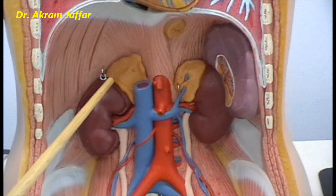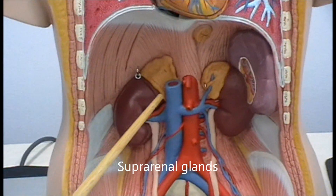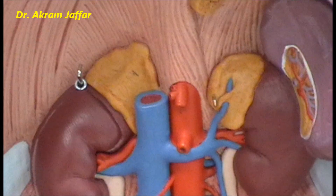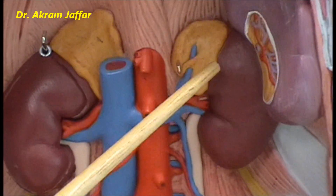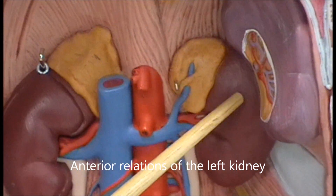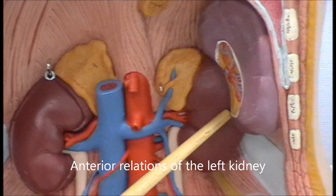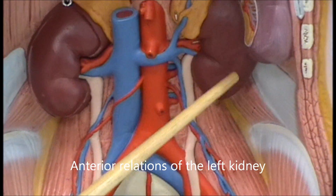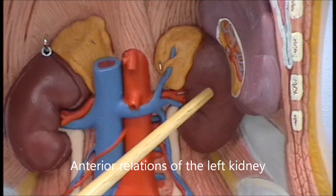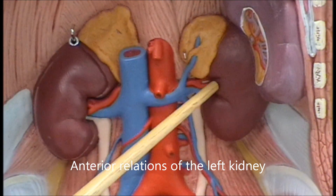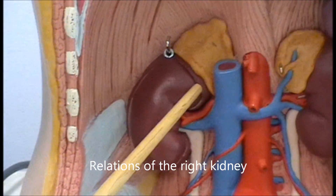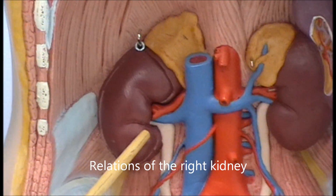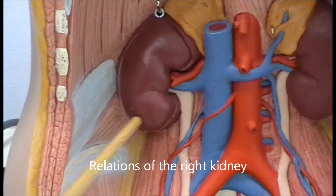The upper pole of each kidney is related to a suprarenal gland. The right suprarenal is triangular in shape, while the left suprarenal is almost crescentic. The left kidney is related superiorly to the stomach, suprarenal, and spleen, and below to the small intestine. At the region of the hilum it is related to the body and tail of the pancreas. On the right side, the second part of the duodenum is related to the hilum, and below that the colon is related.